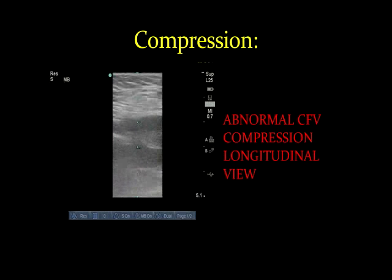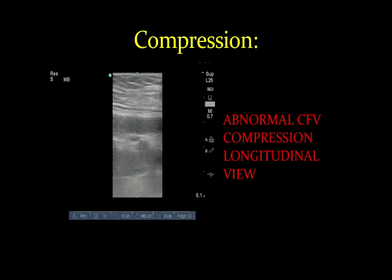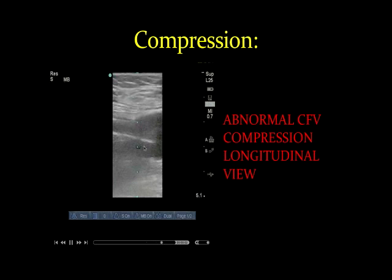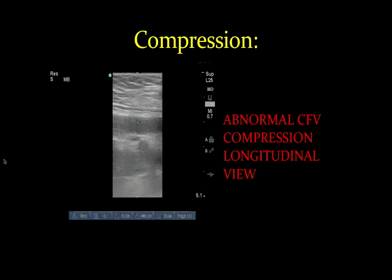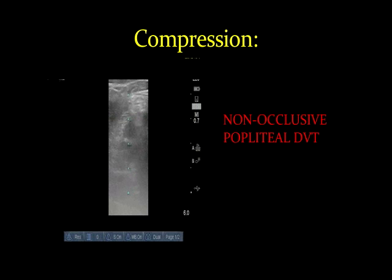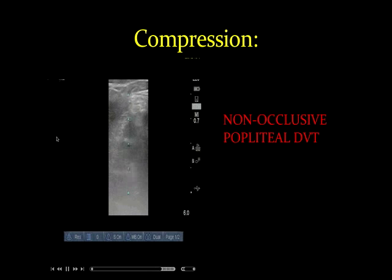In longitudinal view, we have a common femoral vein compression. The vein is inferior here, and this is the artery. During compression you will appreciate that the vein is not fully collapsing. Here we have the popliteal vein and the popliteal artery — during compression there is some collapse but not full, so this is probably a non-occlusive popliteal DVT.